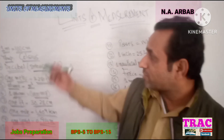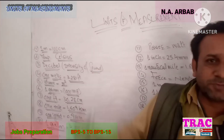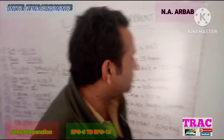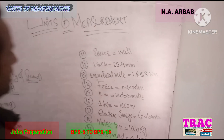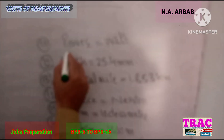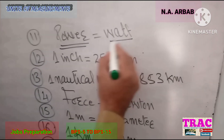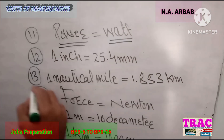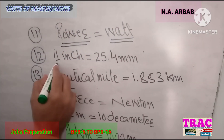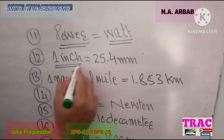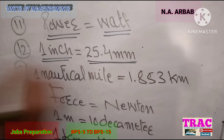And you saw that we have completed this side. Now we start for this side. Number 11: the unit of power is Watt. Number 12: 1 inch is equal to 24.5 mm.